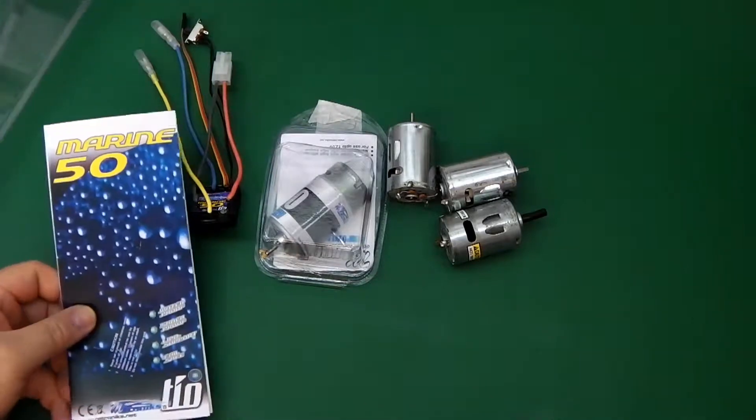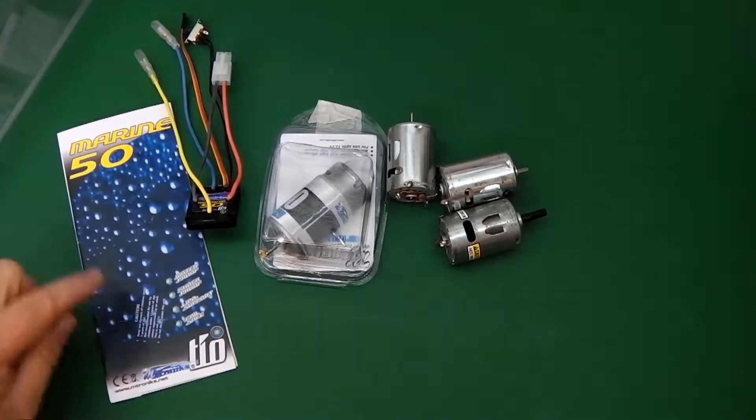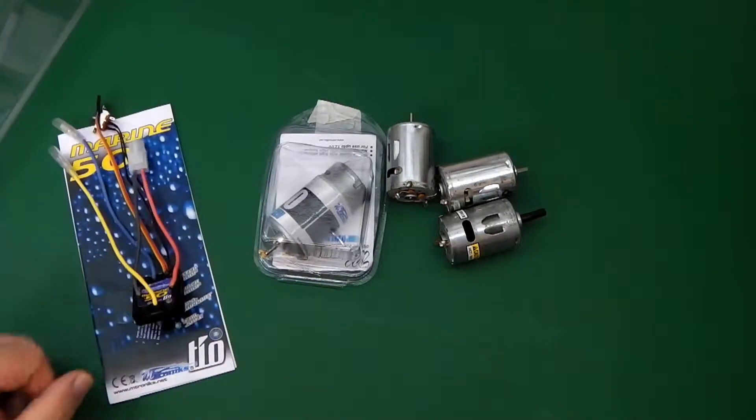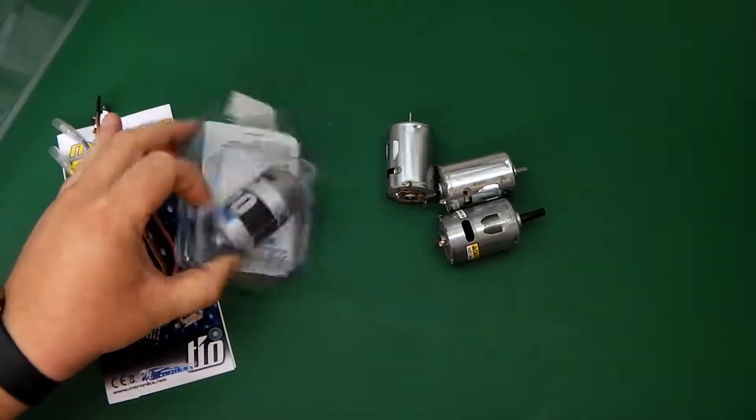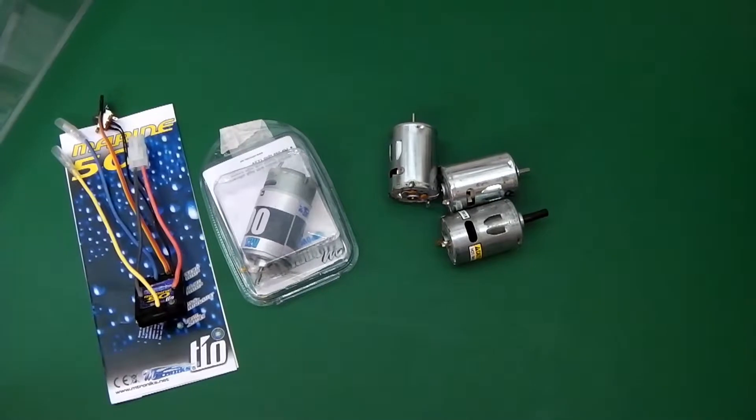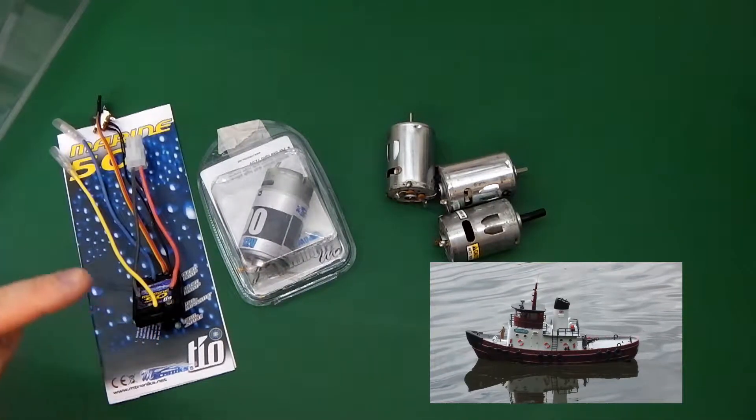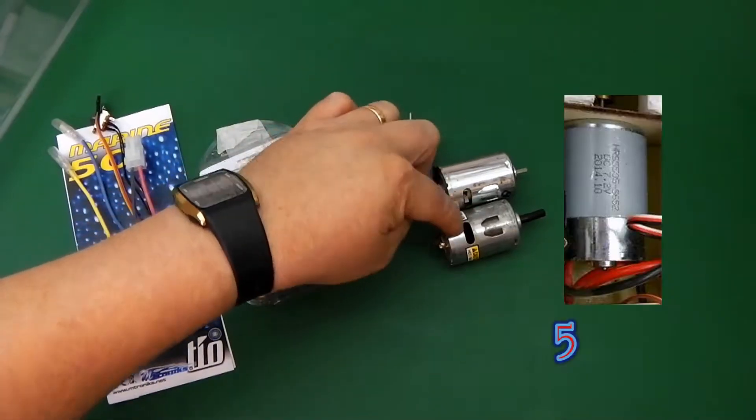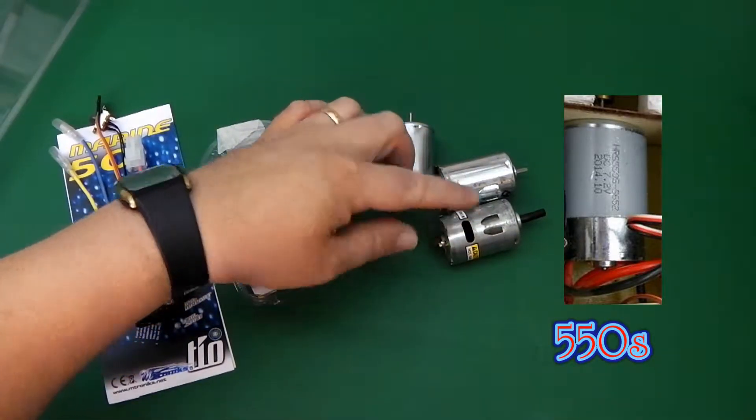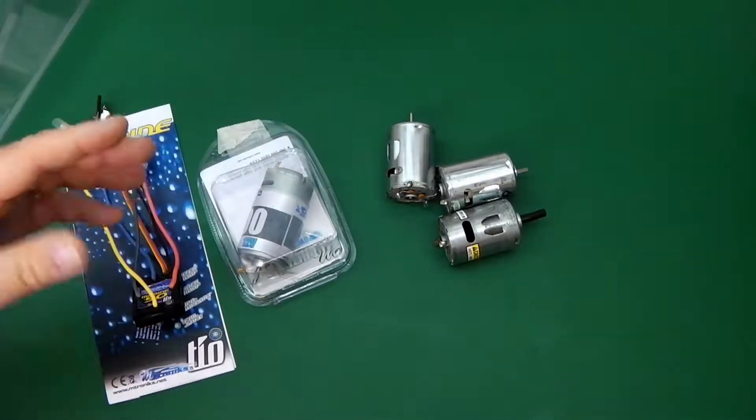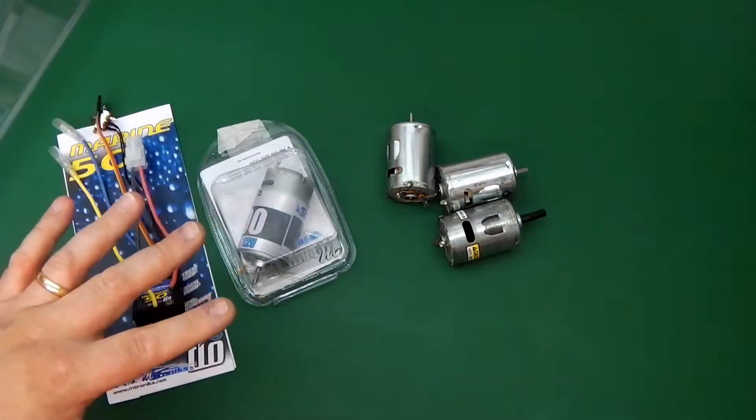To prove a point, we're going to take this TO50 speed controller, brand new, and we're going to take this M600 and we're going to put it in an Aquacraft tugboat and remove the M500. Well, they don't call it an M500, they call it the 500 or a 540 or a 600 depending where you come from.